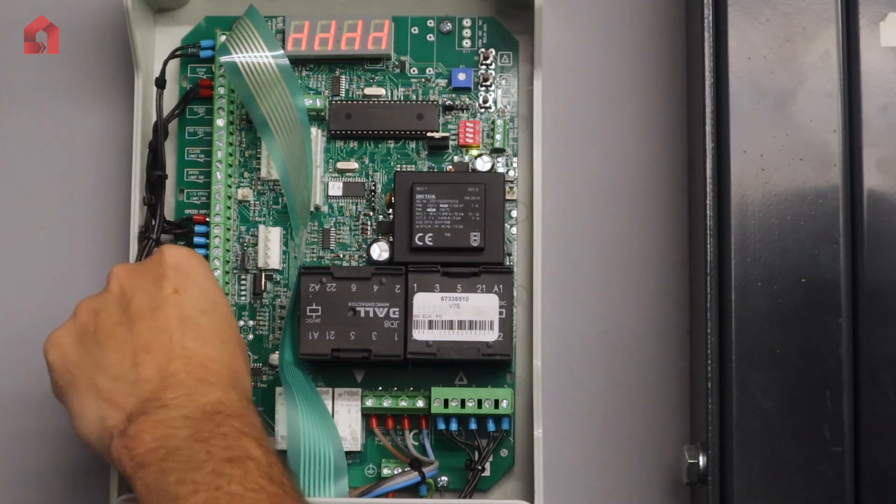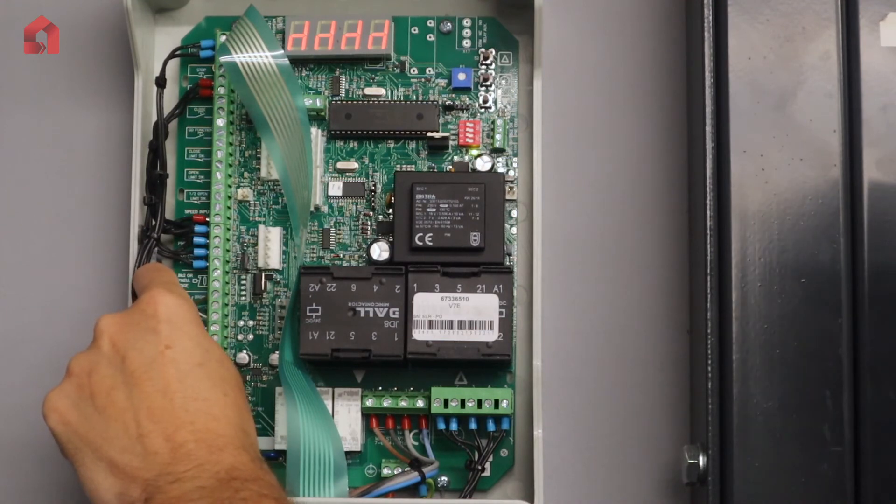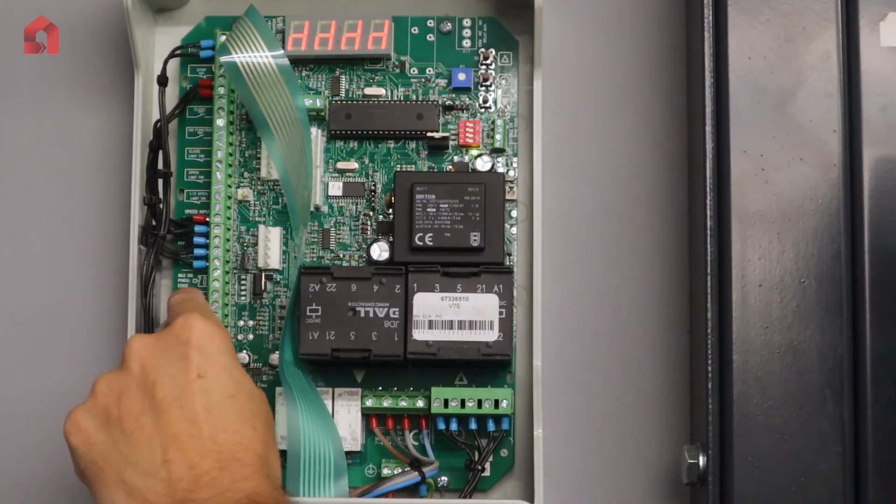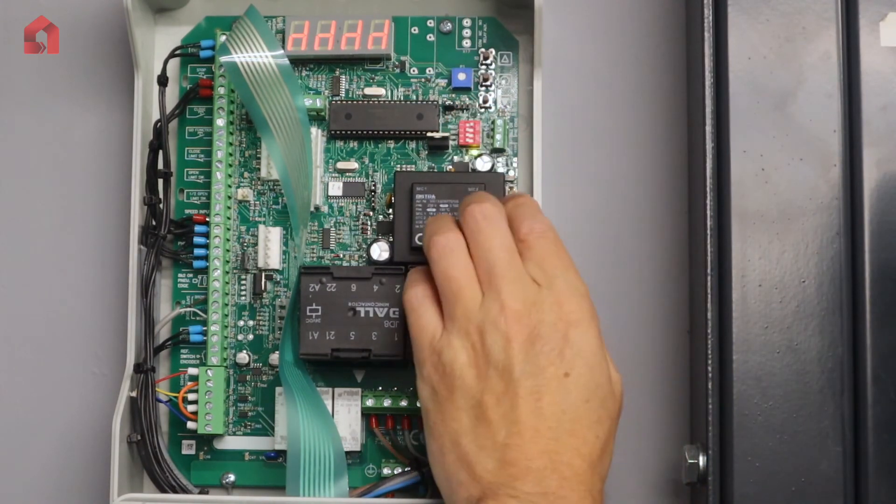You've got your optical edge connections here. You've got the brown, the green, the white, which is 25, 26, and 27. Once you've got them connected, again you have to turn them on in the parameters, so if I flick dip switch one on.